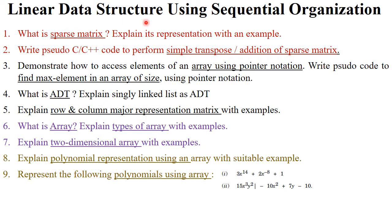The next unit is linear data structure using sequential organization. On this topic, they will ask about sparse matrix — what is a sparse matrix, explain its representation, or write C++ code to perform simple transpose or addition of a sparse matrix. You need to prepare both operations. The next question is array using pointer notation — demonstrate with example. Next, what is abstract data type or explain singly linked list as ADT for four marks. Then explain row and column major representation of a matrix with example, which is most important and generally asked for six to eight marks.